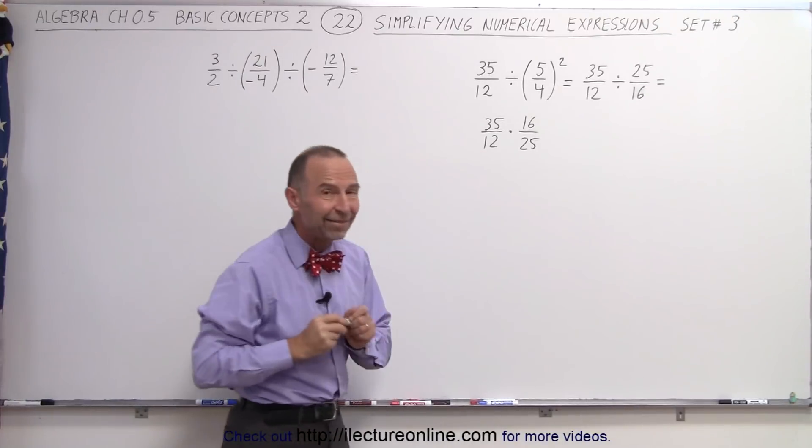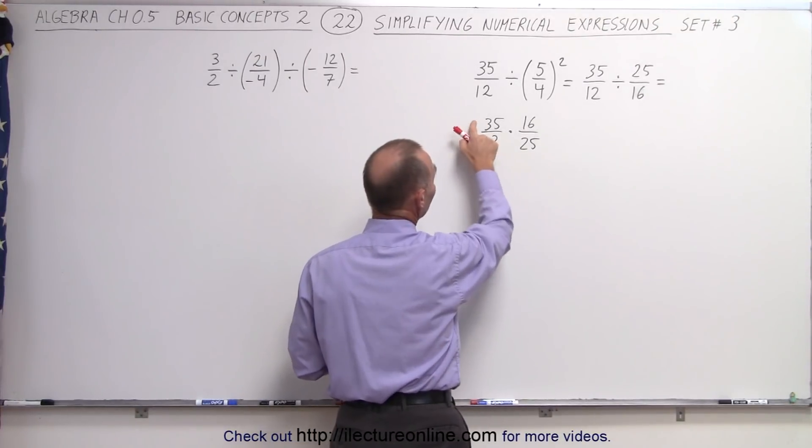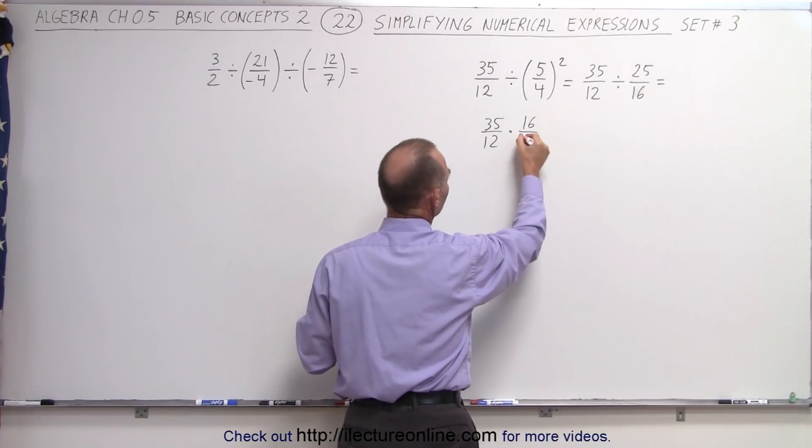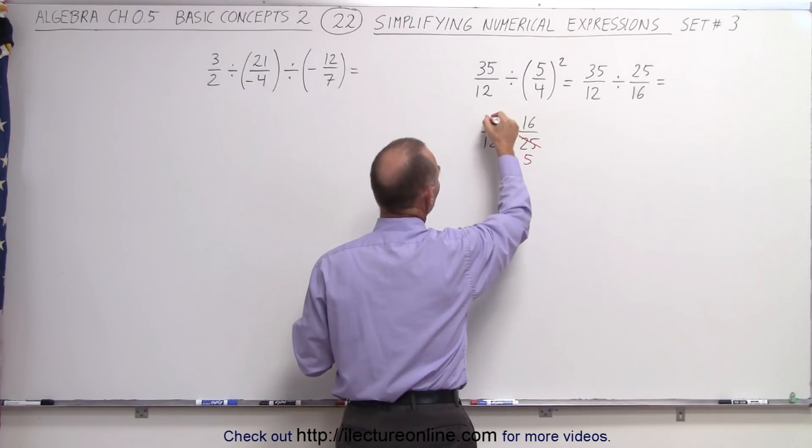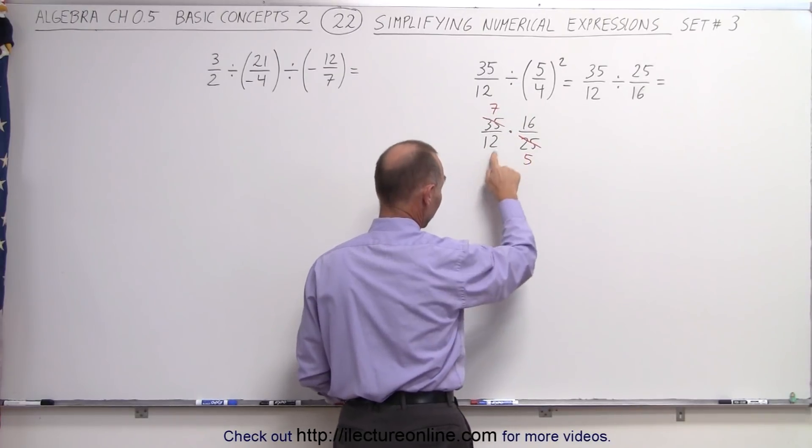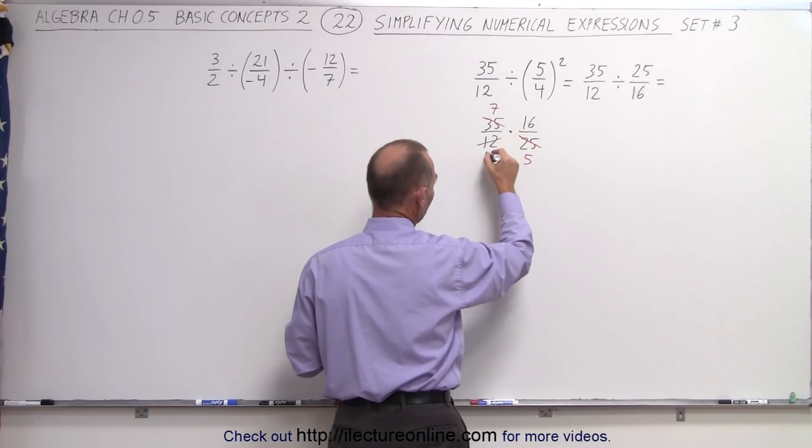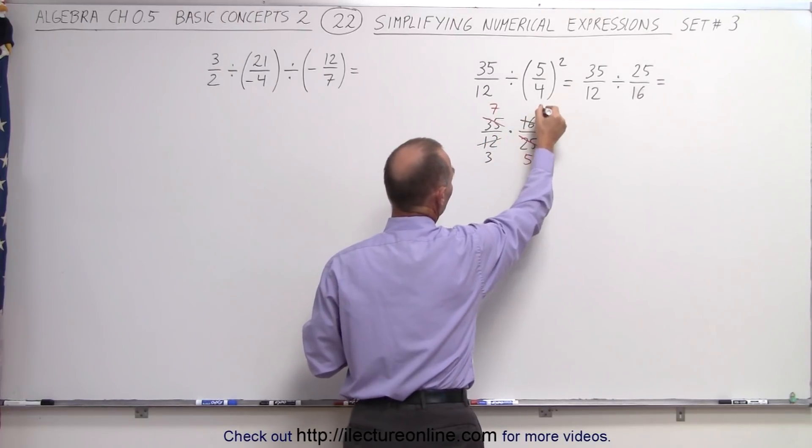Now we can go ahead and simplify things. Notice we have a 35 and a 25, they're both divisible by 5, so 25 divided by 5 is 5, 35 divided by 5 is 7. Then you see that we have 12 and 16, they're both divisible by 4, so 12 divided by 4 is 3, 16 divided by 4 is 4.